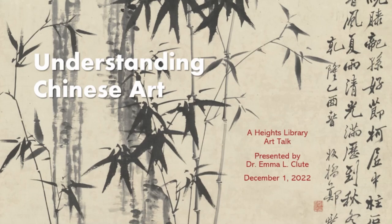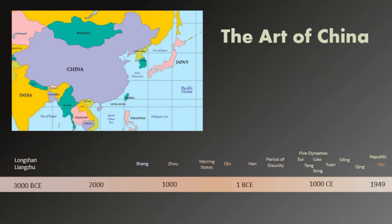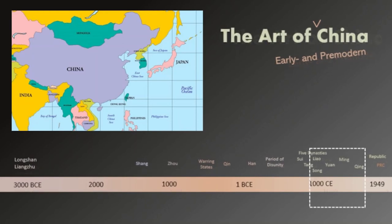We will be looking not at all Chinese art, but rather at pre-modern and early modern art in China, specifically the period during the Southern Song, Yuan, Ming, and into the Qing dynasty — an almost 800-year period. There are a few reasons why I'm focusing on this time range. One is because the art in which the Chinese themselves have held the highest esteem was produced during this time.